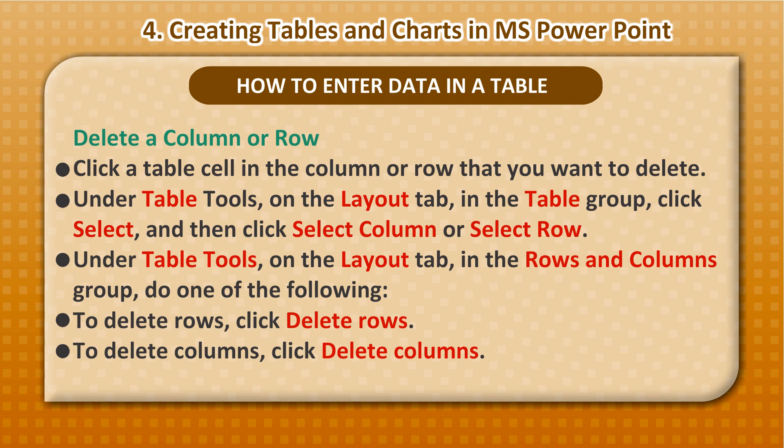Delete a column or row: Click a table cell in the column or row that you want to delete. Under Table Tools, on the Layout tab, in the Table Group, click Select, and then click Select Column or Select Row. Under Table Tools, on the Layout tab, in the Rows and Columns group, do one of the following: to delete rows, click Delete Rows; to delete columns, click Delete Columns.